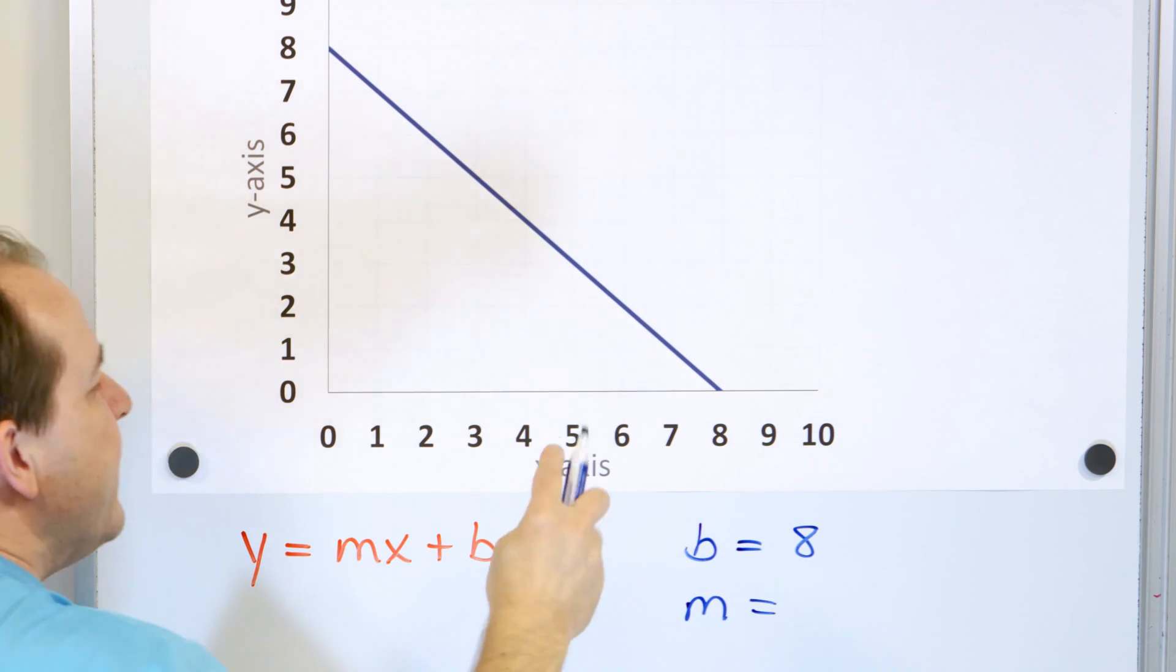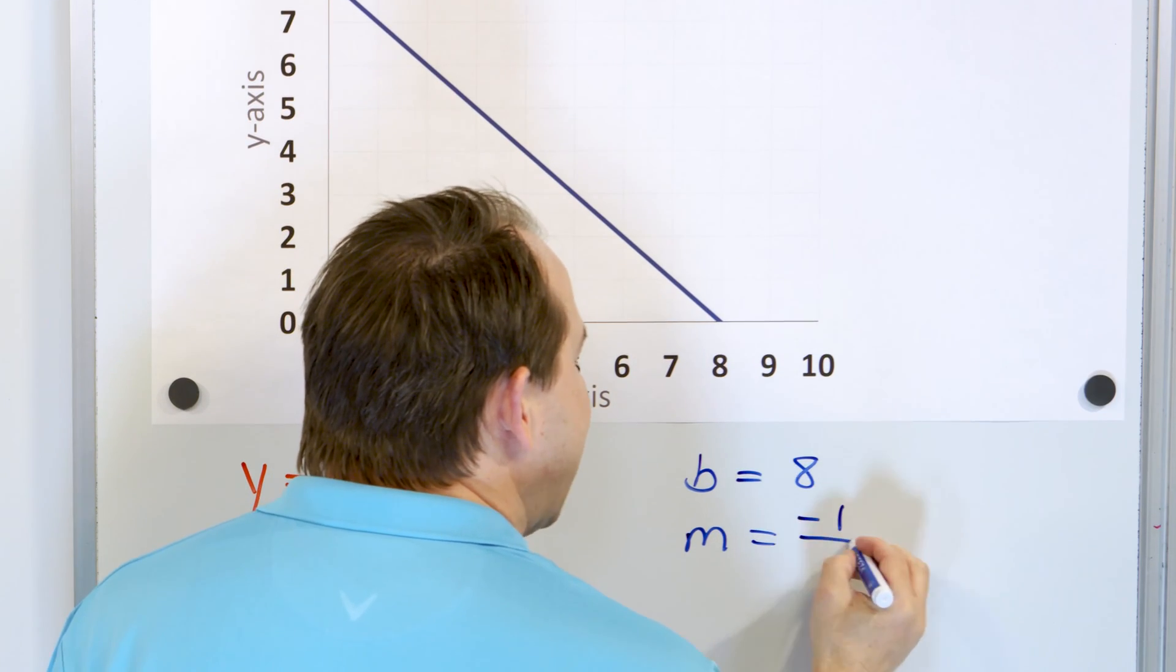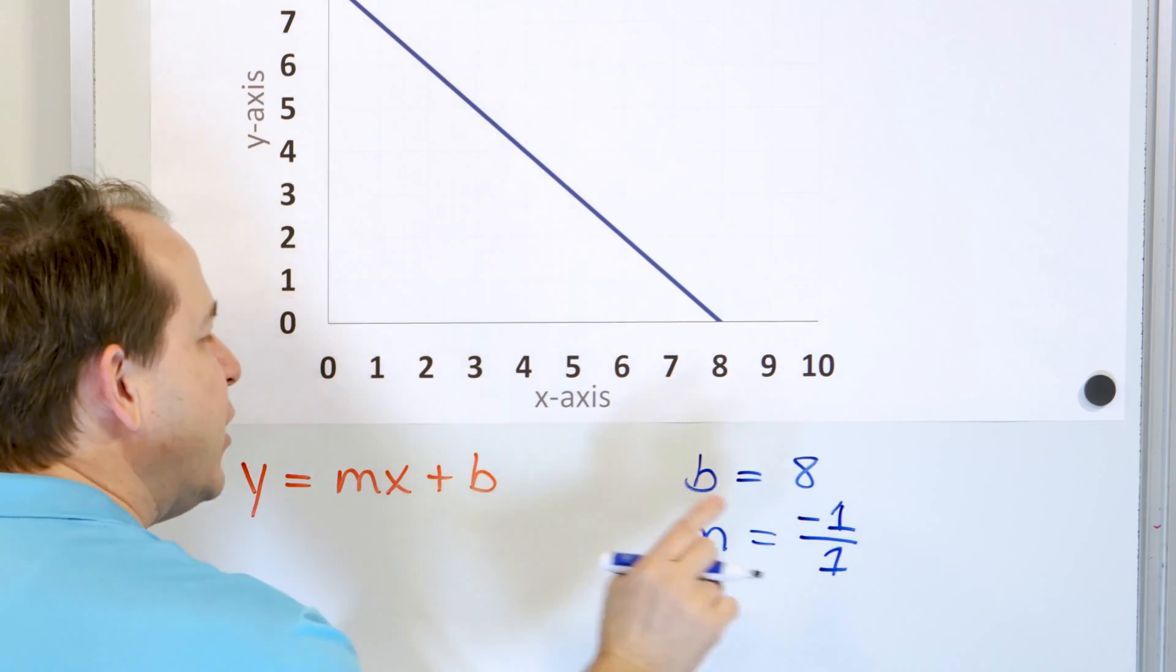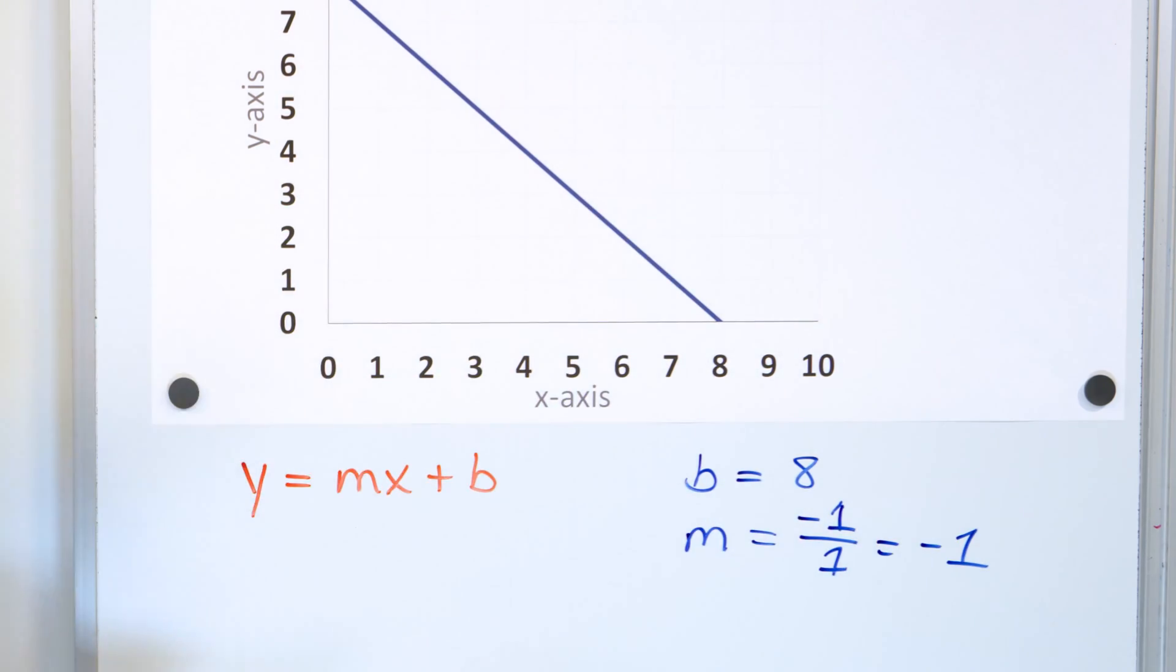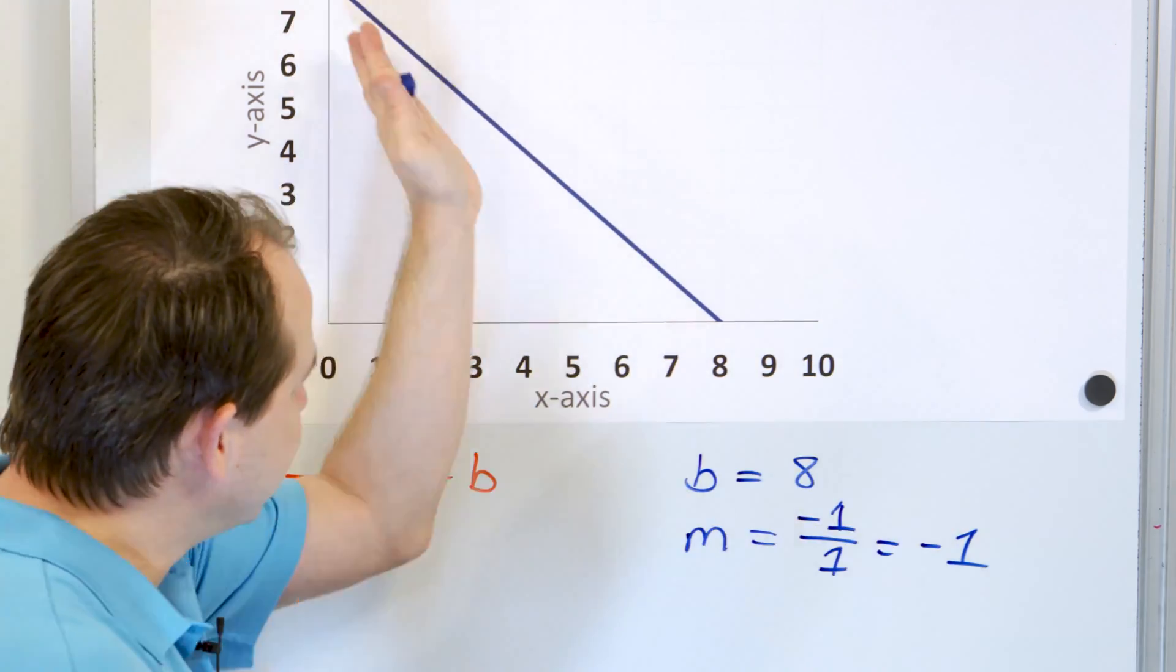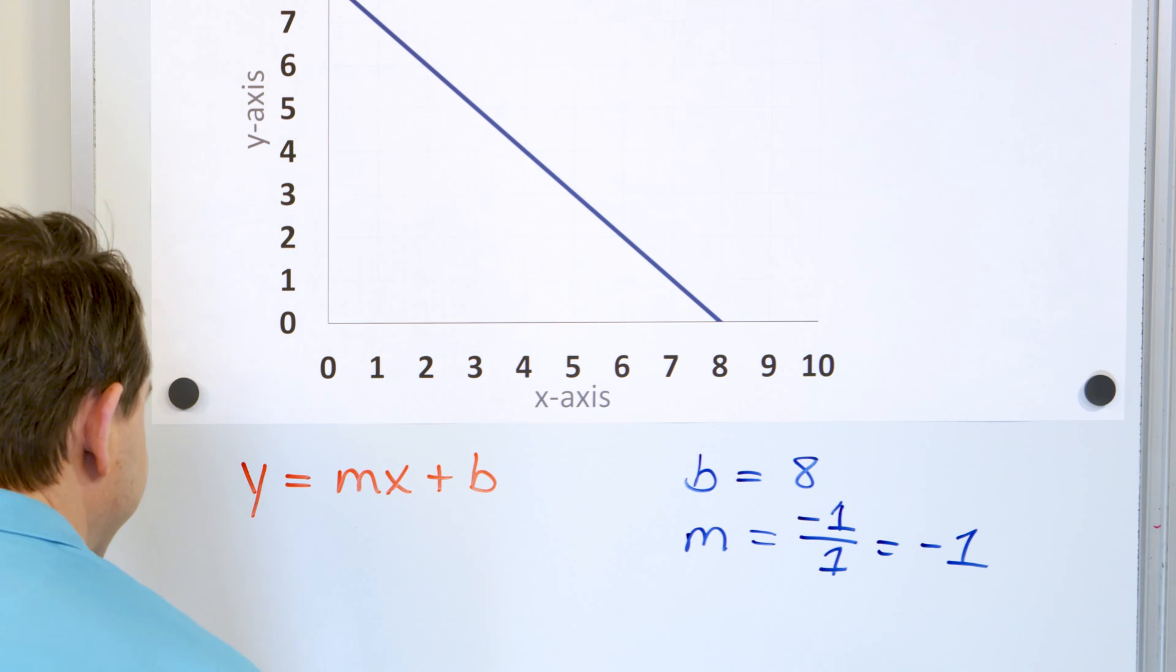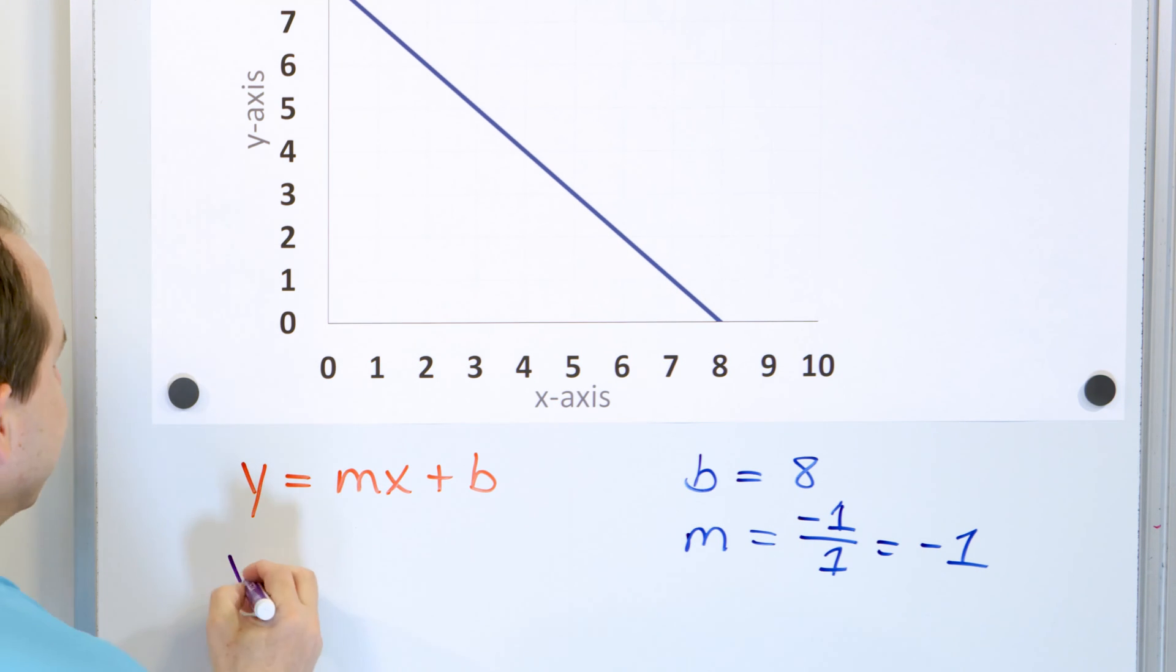So every time it's basically down 1 and over 1. So it's negative 1 going down and then over 1. When you divide this, you just get a slope of negative 1. Of course, it's negative, which tells us it's going this direction. So now that you have that information, you can construct the equation of a line.